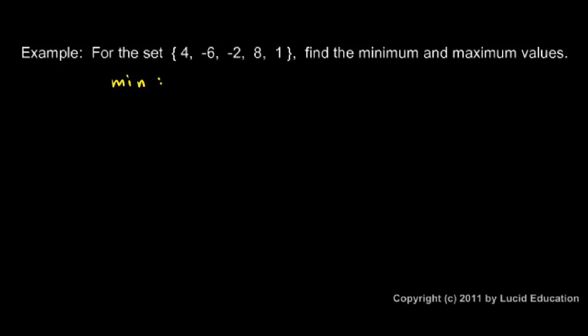So the minimum would be the least number. And with a small number of elements in the set like this, it's pretty easy just to look and see that negative six is the least. You can just tell at a pretty quick glance that there aren't any numbers less than that. So negative six is the minimum, and the maximum in this case is eight.